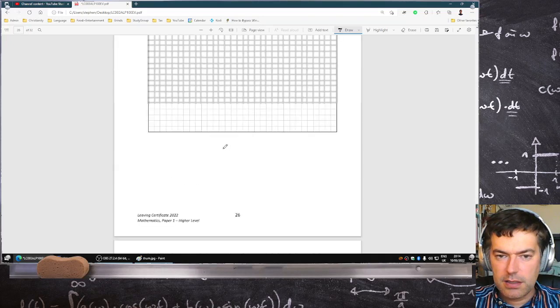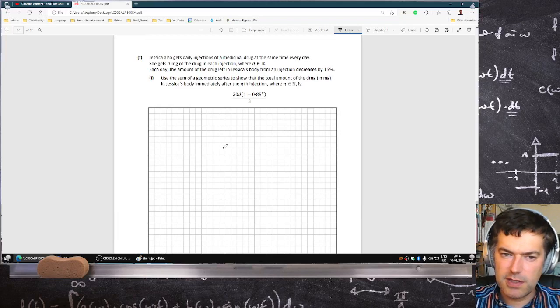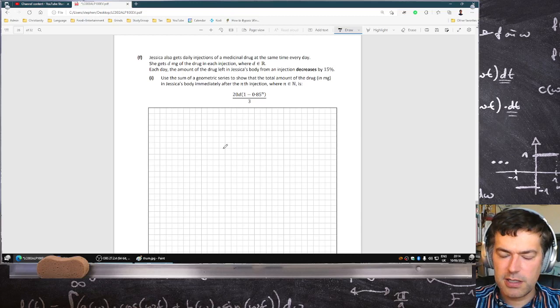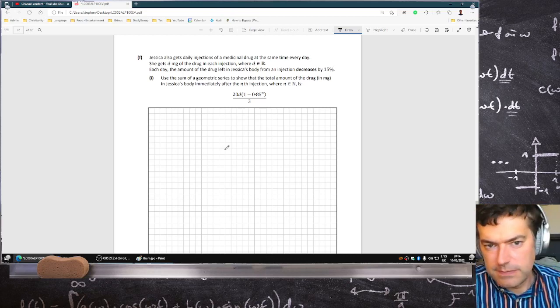And then not finished yet. Jessica also gets daily injections with medical drugs at the same time every day. She gets D milligrams of the drug in each injection. Each day the amount of drug left in Jessica's body decreases by 15%. Use the sum of geometric series to show the total amount of drug in milligrams in her body after the Nth injection is given by that.